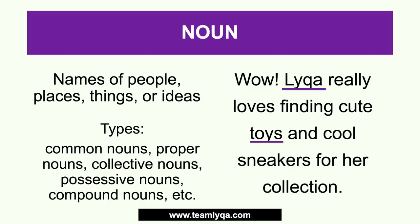Another noun is 'toys' — a name of a thing, a common noun since there's no capital letter and it's not a specific name. Then 'sneakers' is also a noun — also a thing. And 'collection' is a noun too — a name of a thing. Since a collection is a group of things, it may fall under collective noun. So in this sentence, we have four nouns: Laika (proper noun), toys, sneakers (common nouns), and collection.